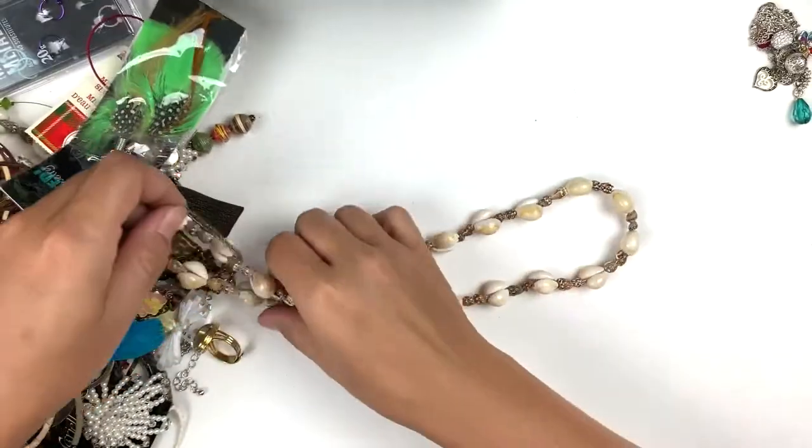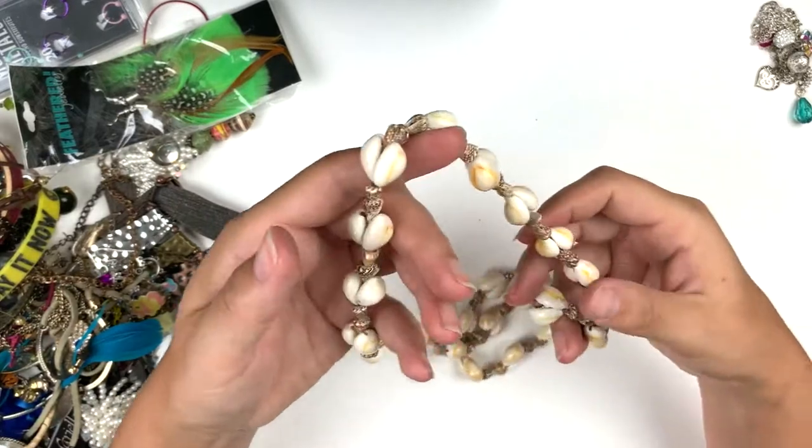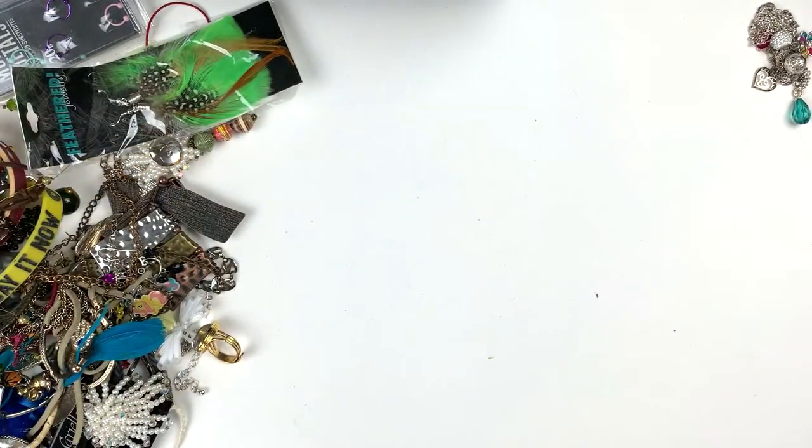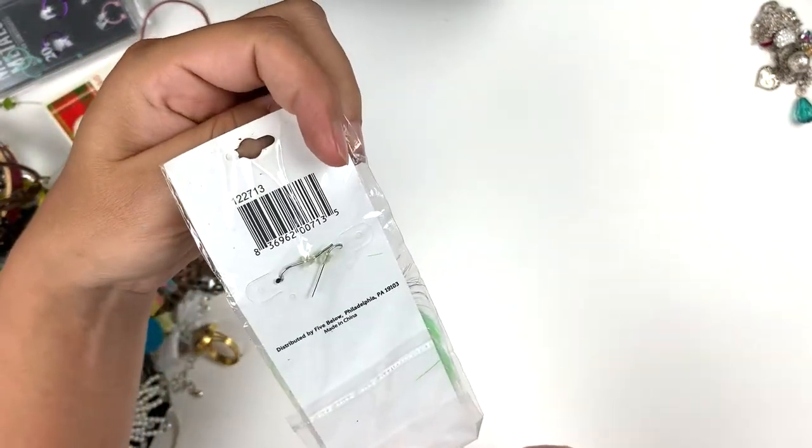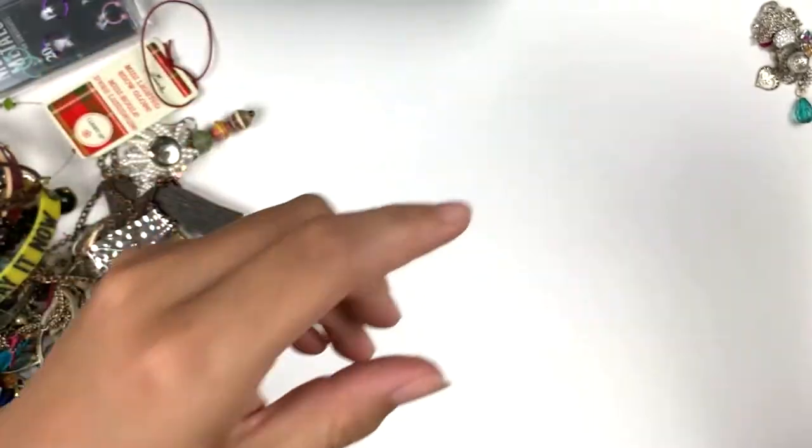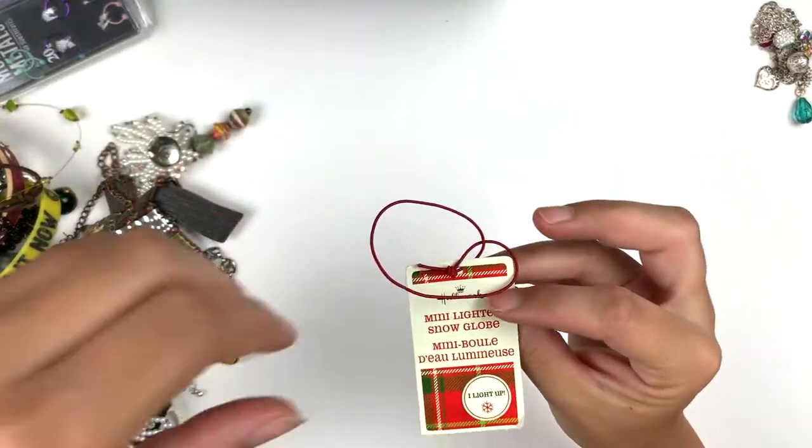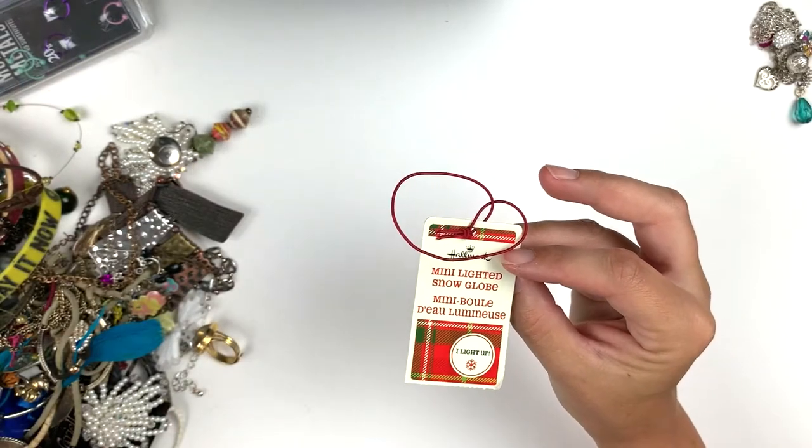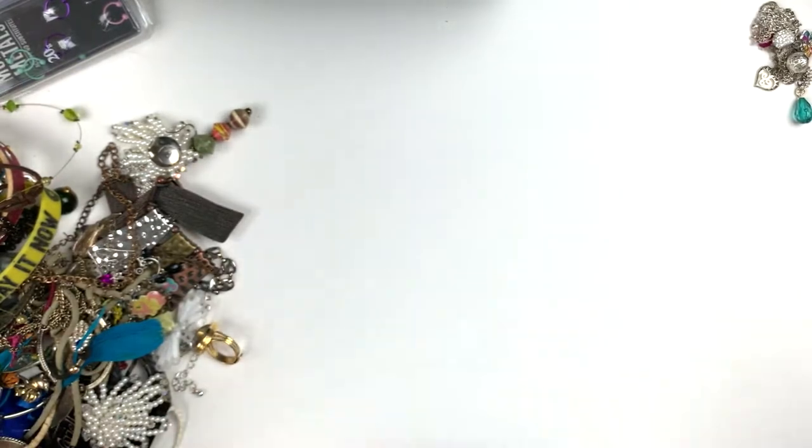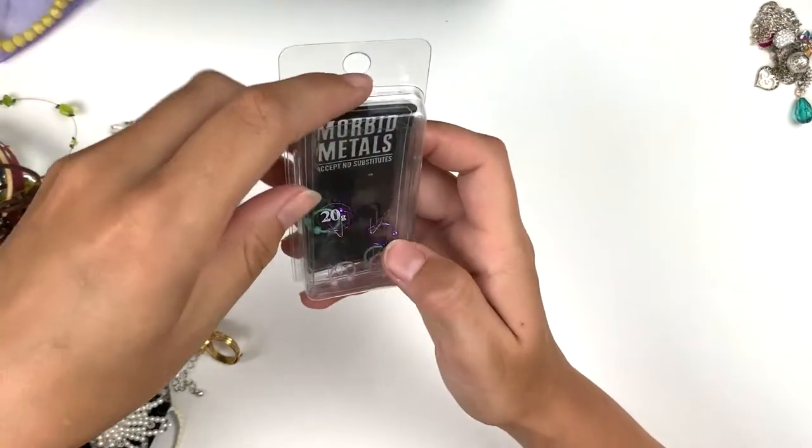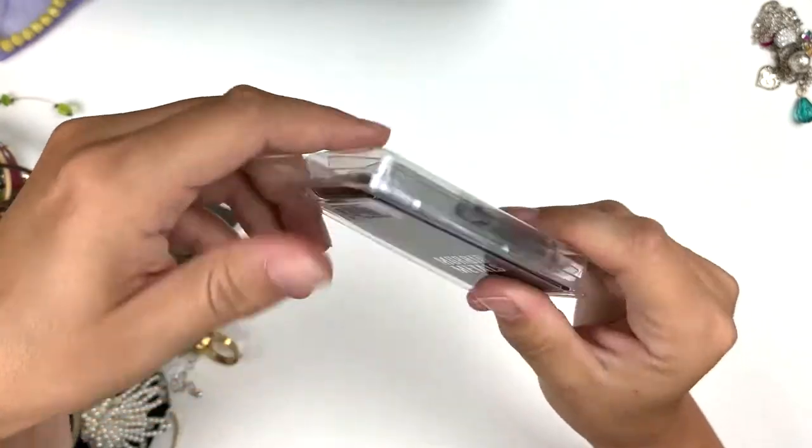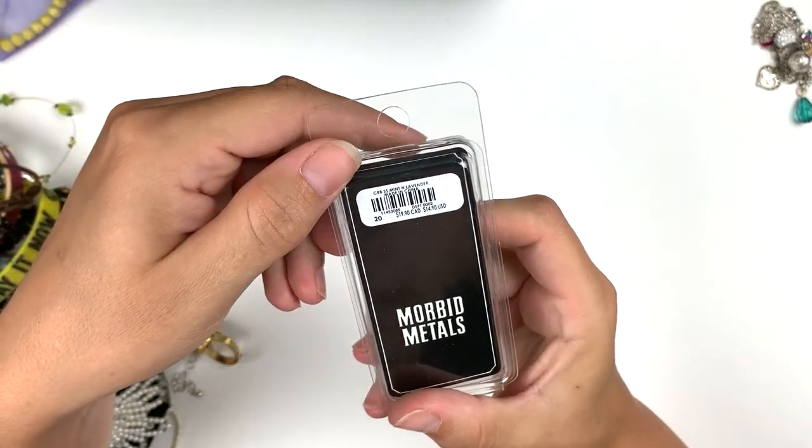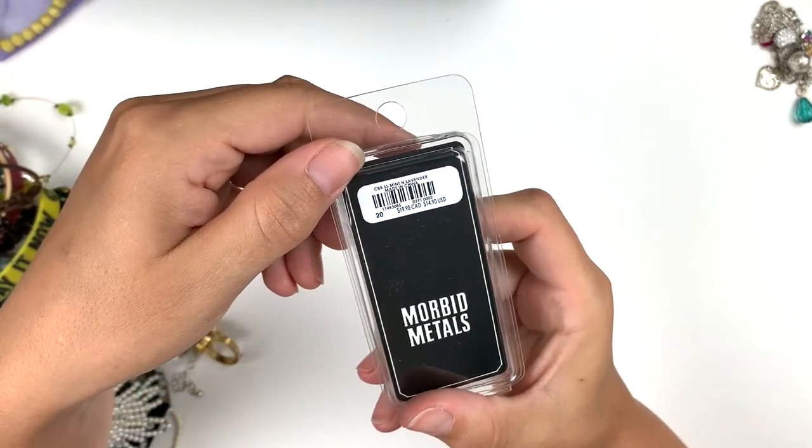We've got some more shells. Stuff in it. Just some little feathered earrings, those are cute. Five Below. Mini lighted snow globe. I wish that were in there. This is the tag Morbid Metals, accept no substitutes. They're like little body jewelry things. Hey, they were like 15 bucks.